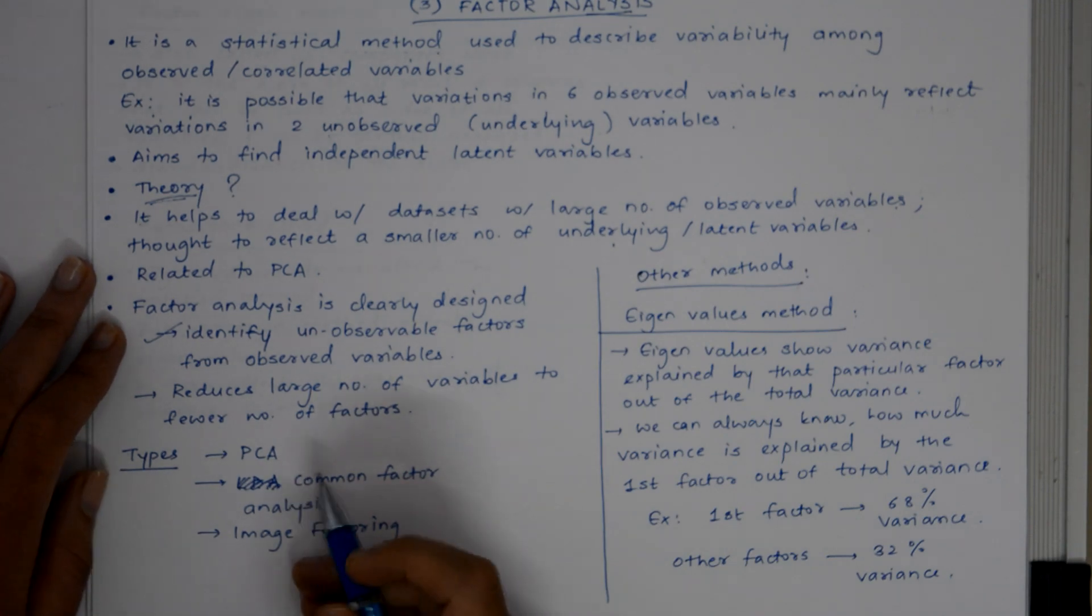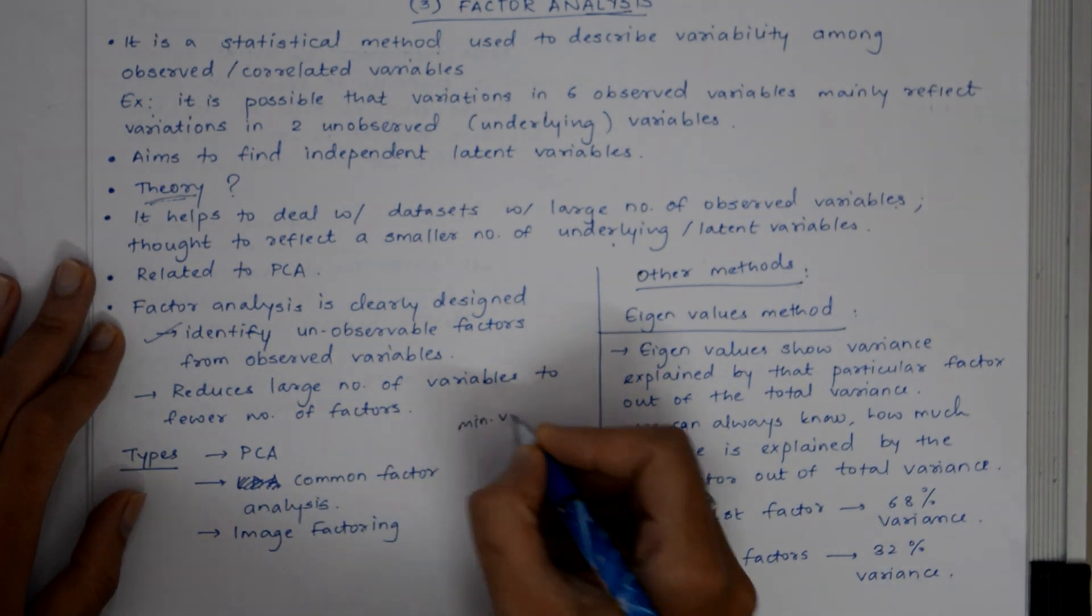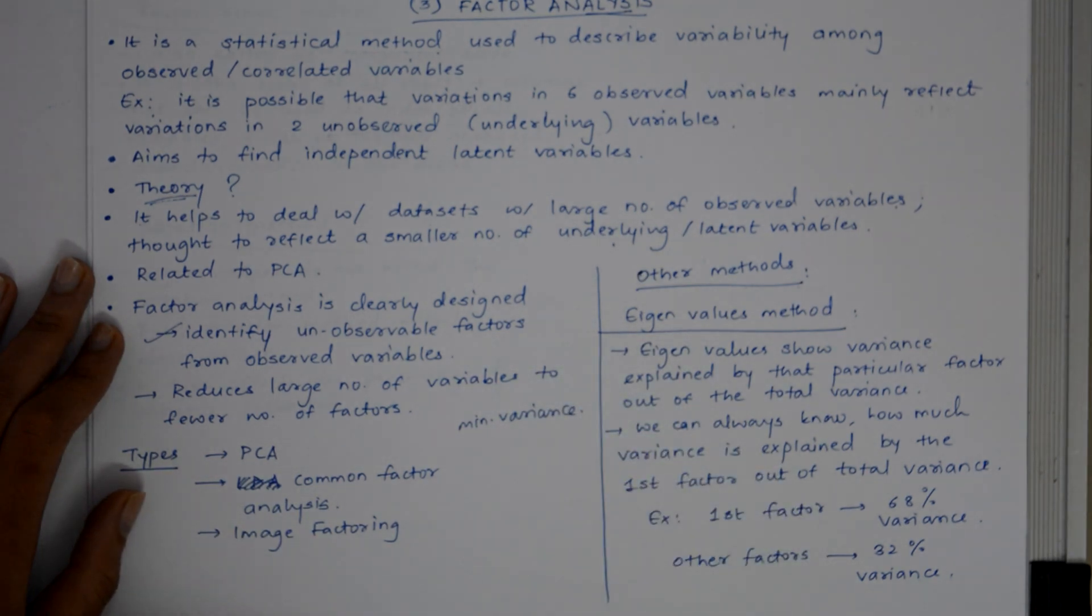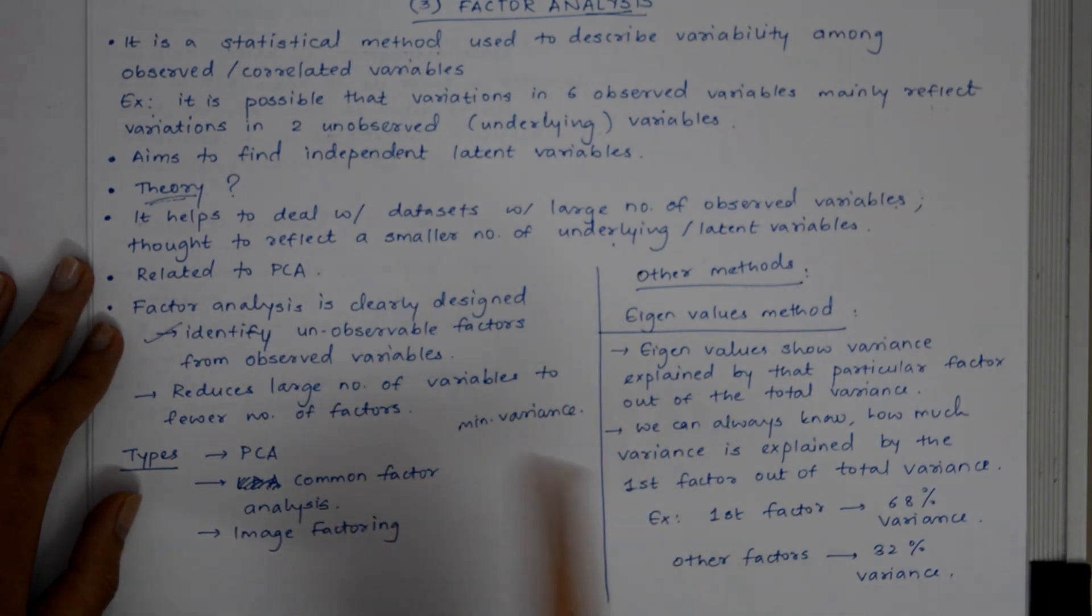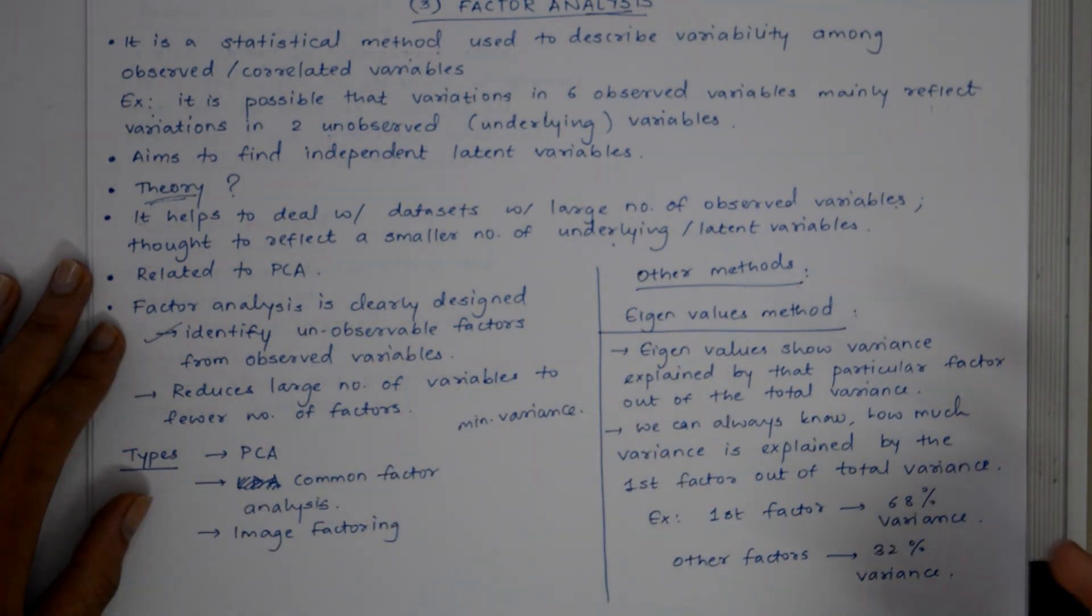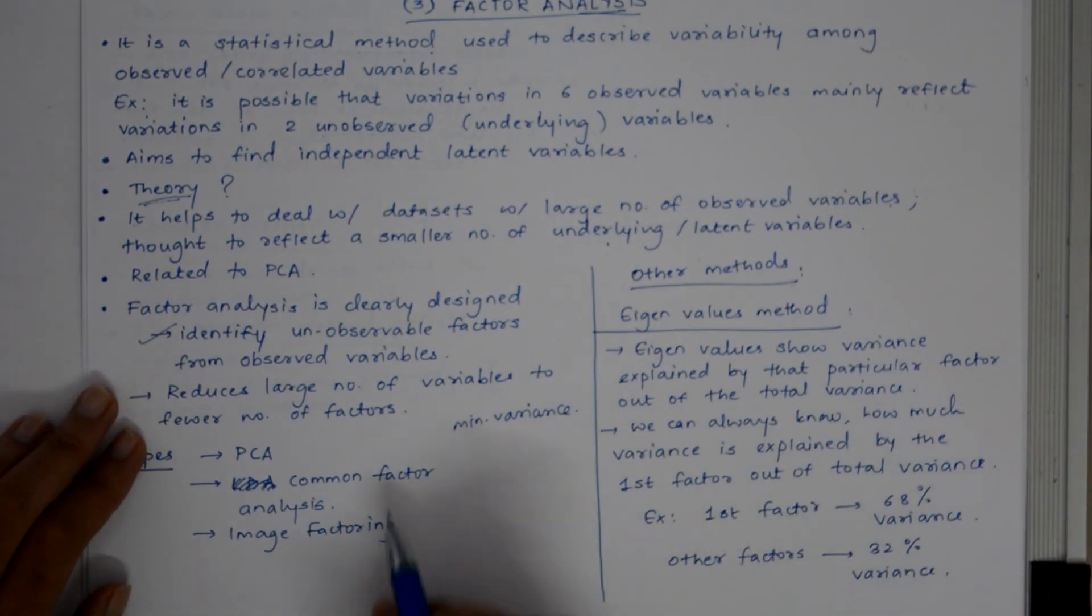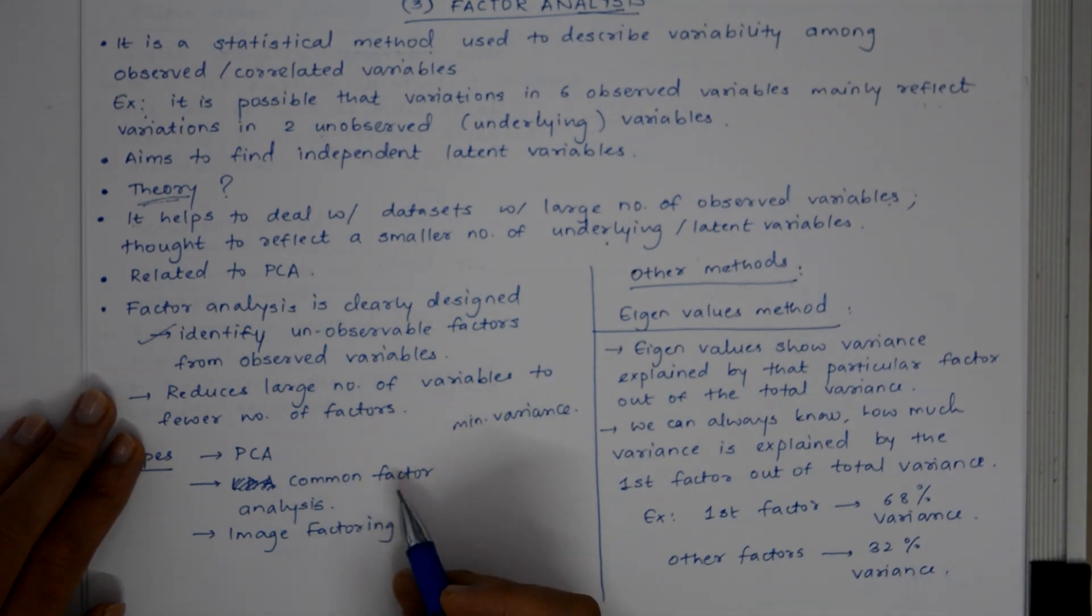PCA starts with extracting minimum variance and puts it in the first factor. After that, it removes the variance explained by the first factor and starts extracting maximum variance for the second factor. This process goes on till the last factor. Common factor analysis is the second most preferred method.